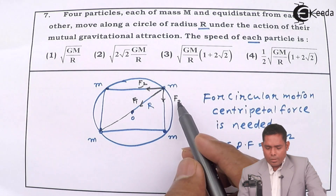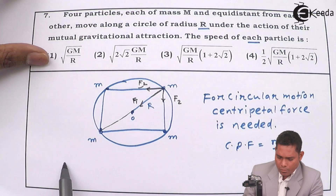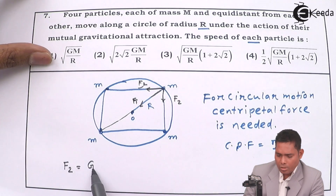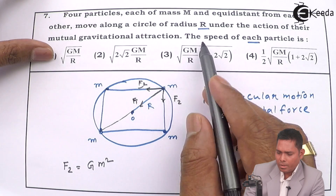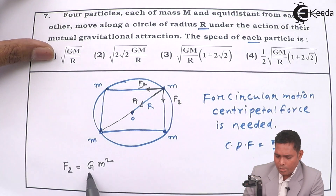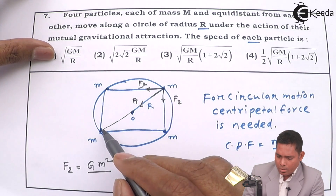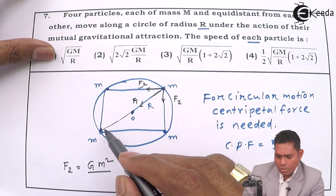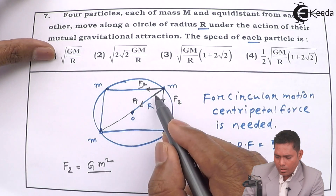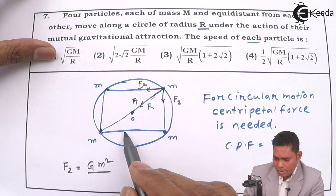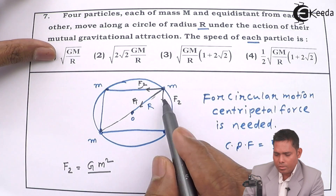To find the magnitude of F2, according to Newton's law of gravitation, F2 = GM²/A², where A is the distance between adjacent particles. To find A: the diagonal across the square is the diameter 2R. Using Pythagoras, A² + A² = (2R)², giving 2A² = 4R², so A² = 2R².